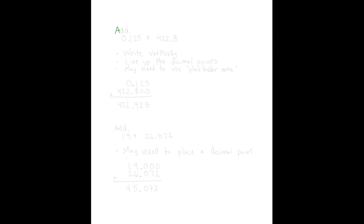Let's start with an example. The instructions for this problem say to add, and we are given 0.125 plus 422.8. Notice that the problem, as stated, is written horizontally. The numbers are side by side. One of the first things you want to do when you are adding with decimals is to write the problem vertically. When you do that, one of the things you want to make sure to do is to line up the decimal points so that one is right on top of the other.